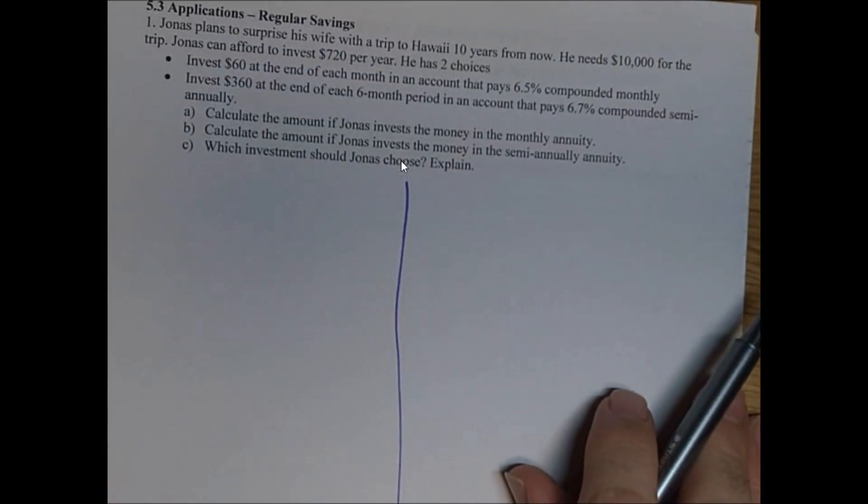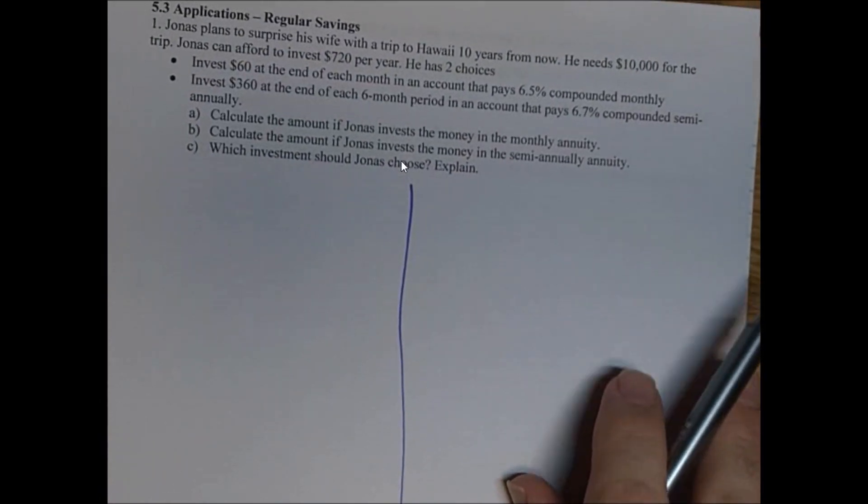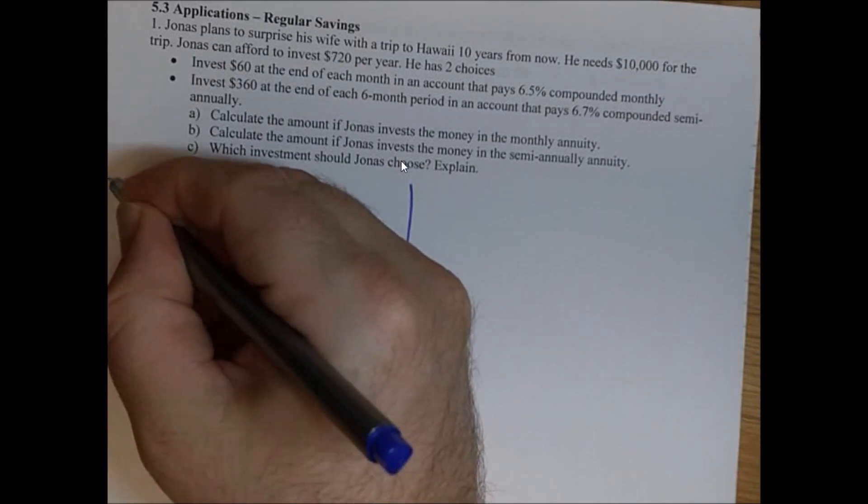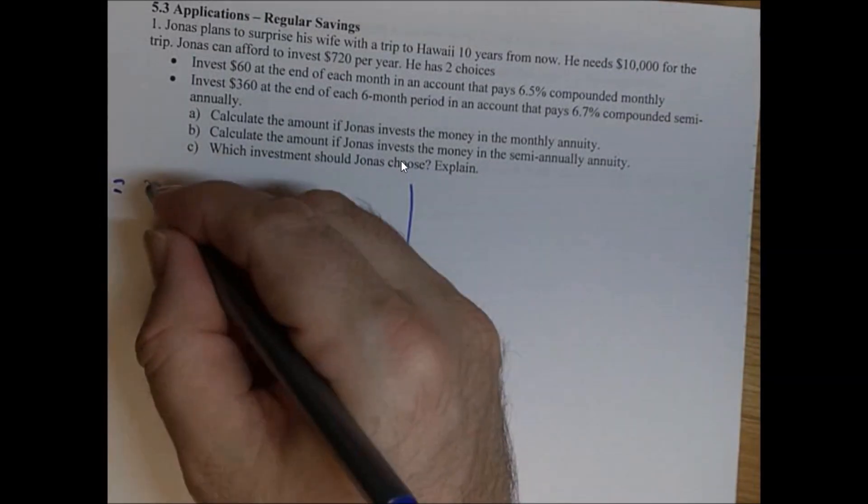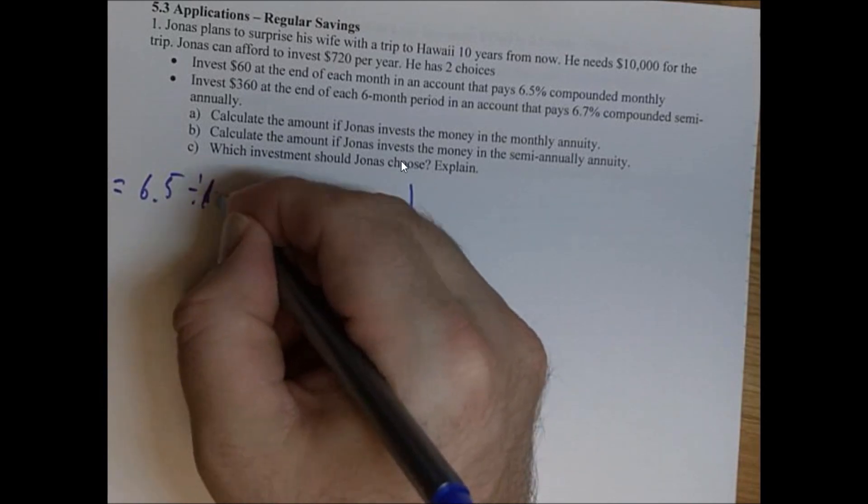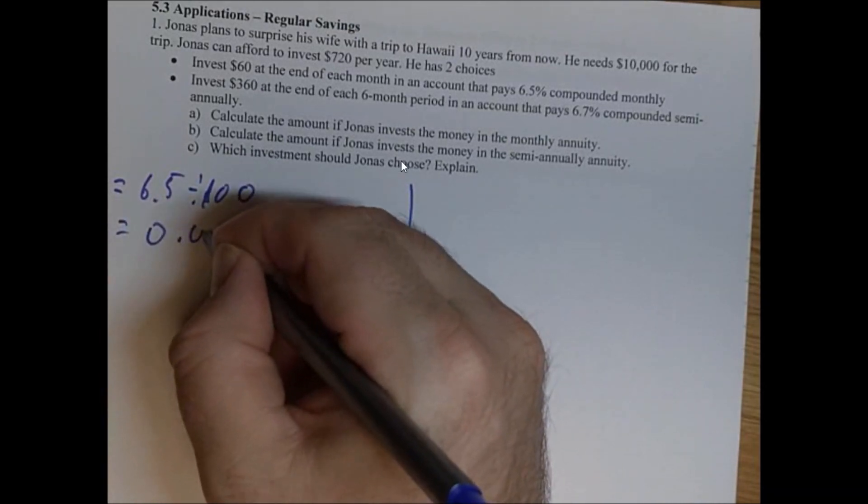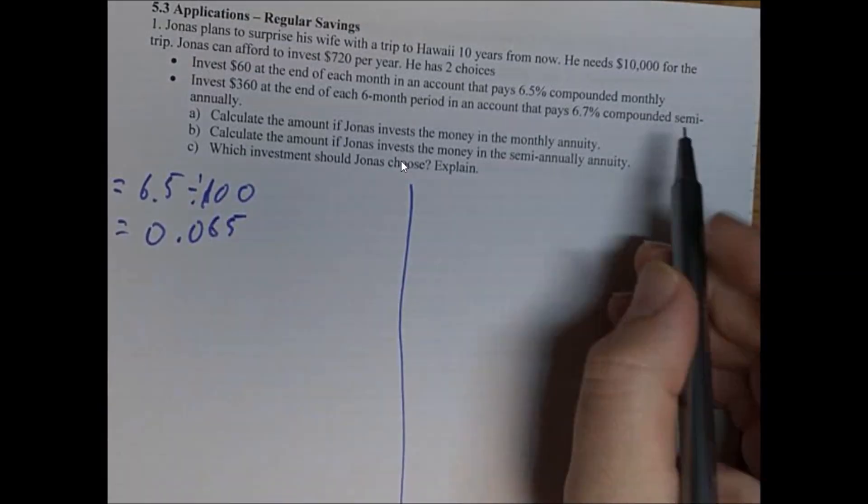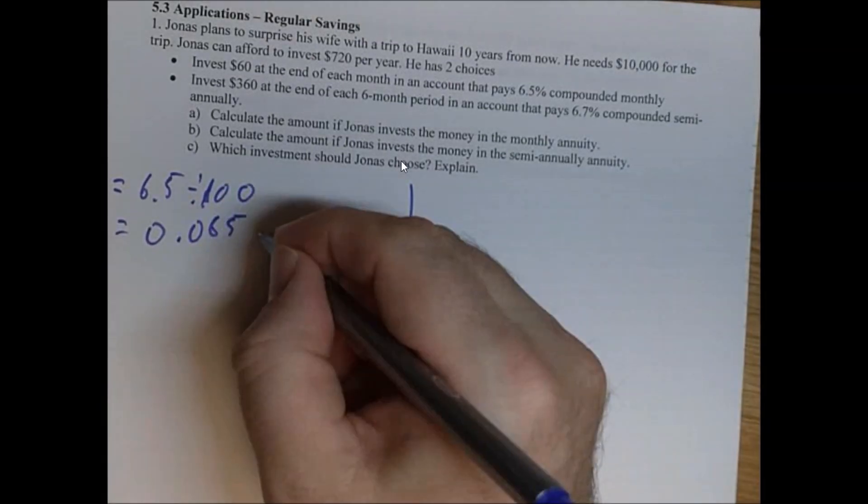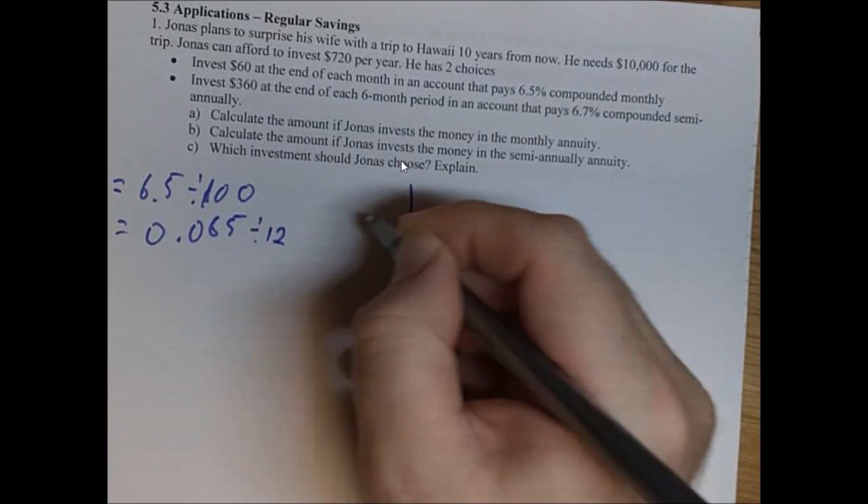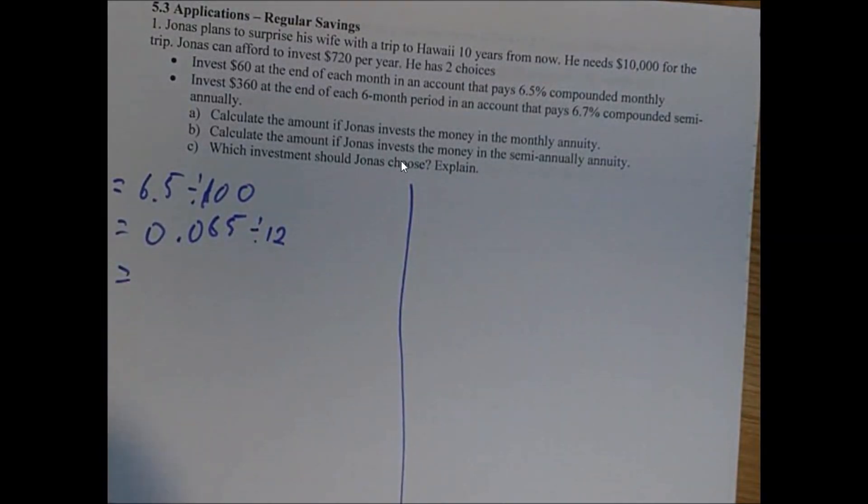So the investment one now pays 6.5% monthly. So I always start with I. So I is 6.5 divided by 100. And you get 0.065. Okay, the first one's monthly. So you divide it by 12.